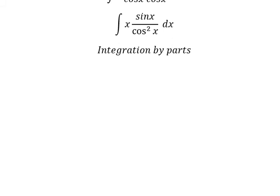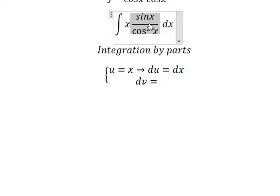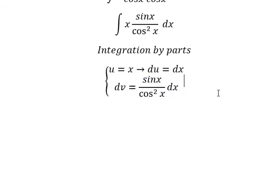So I will put u equals to x. After that, we do first derivative for both sides. And we have du equals to dx. dv, we have sine x over cosine x dx.